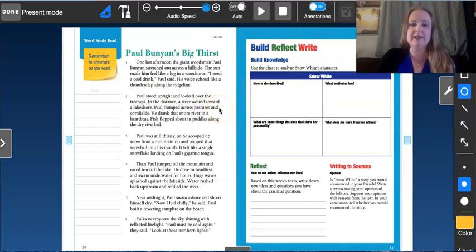So in Paul Bunyan's Big Thirst, get my circle tool. I'm going to be scanning for words that have a word inside of them, and I'm going to see if it really is a compound word or if it's like today and there's just one word that happens to be inside of it. Let's see.